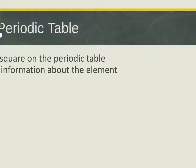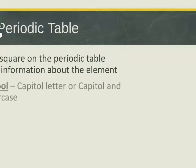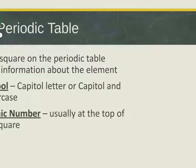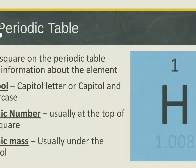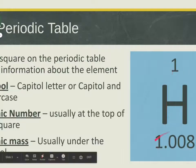Each square on the periodic table gives information about the elements. Some periodic tables will have more information than others, but all periodic tables will have the following: the symbol, which is either a capital letter or a capital and a lowercase letter; the atomic number, usually at the top of the square; and the atomic mass, usually under the symbol.